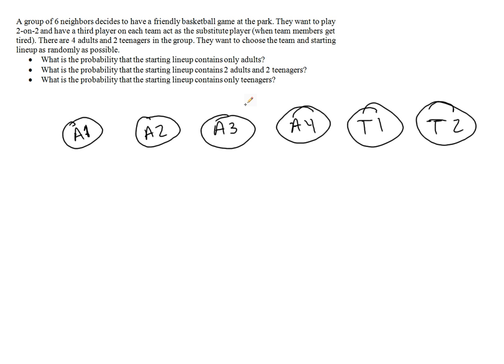The first question is: what is the probability that the starting lineup contains only adults? Here I've drawn the six players: adult one, adult two, adult three, adult four, teenager one, and teenager two.